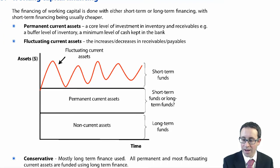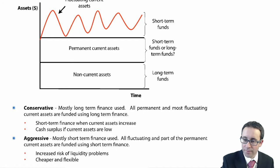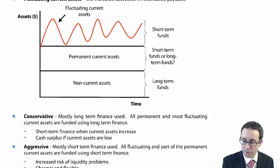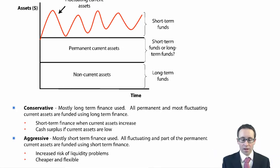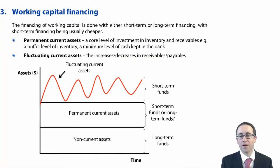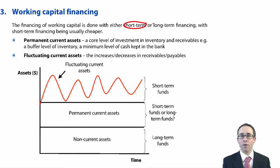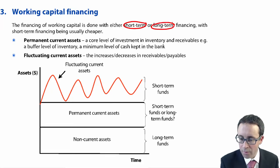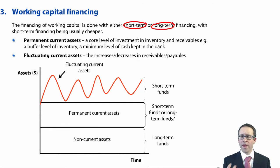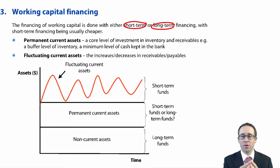You can finance your working capital via short-term funds — utilising your payables, an overdraft, a short-term bank loan, or debt factoring. Or you can go with long-term financing. The focus here is on the short term, so we need to think about what level of short-term finance we are going to use to fund our assets within the business.